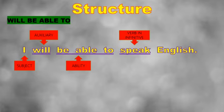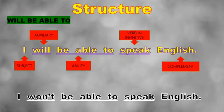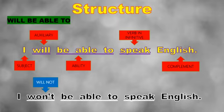For 'will be able to': 'I will be able to speak English.' You have your subject — I, you, he, she — plus the auxiliary verb 'will,' then the phrase 'be able to' to express ability, then the verb in infinitive, and your complement. For example: 'I will be able to speak English' in positive, or in negative: 'I won't be able to speak English.' Again, 'won't' is the contraction of 'will not.'